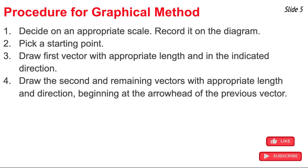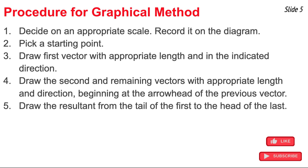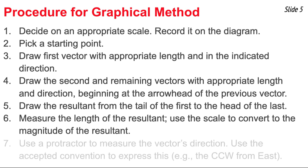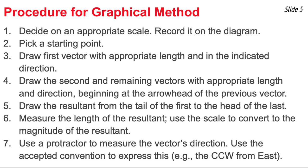Fifth, draw the resultant from the tail of the first vector to the arrowhead of the last vector. Then, to determine its magnitude and direction, measure the length of the resultant and use the scale to convert to magnitude. Use a protractor, placing its origin at the tail of the first vector, and measure the resultant's direction using the accepted convention. We will frequently use the counterclockwise from east convention.